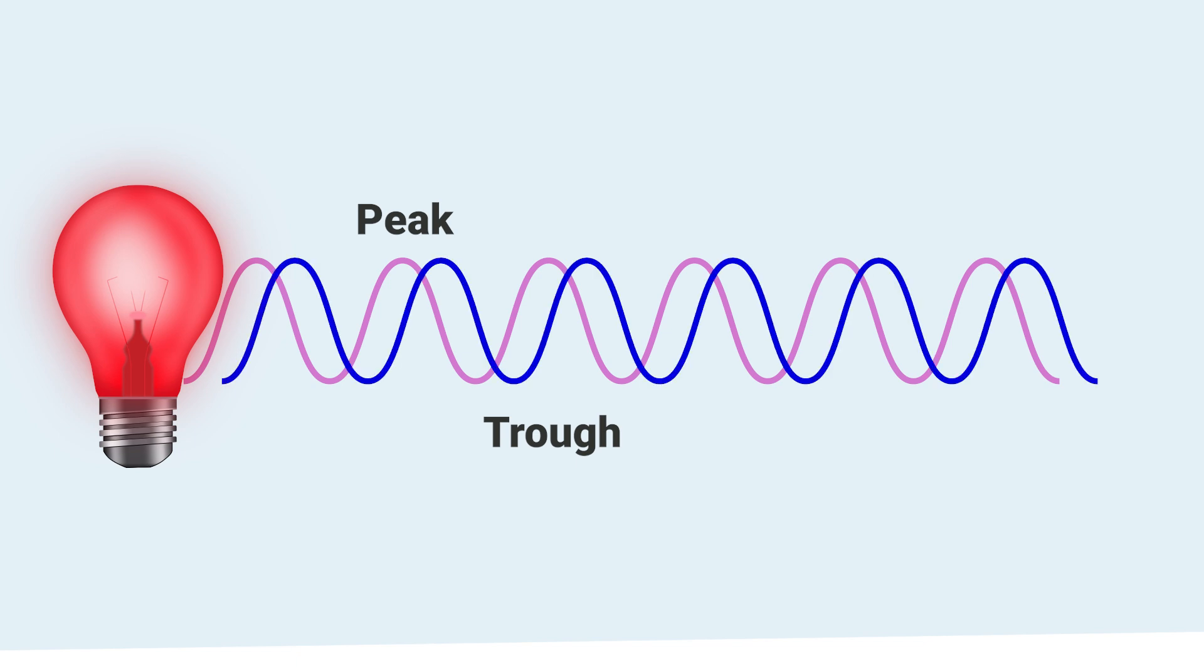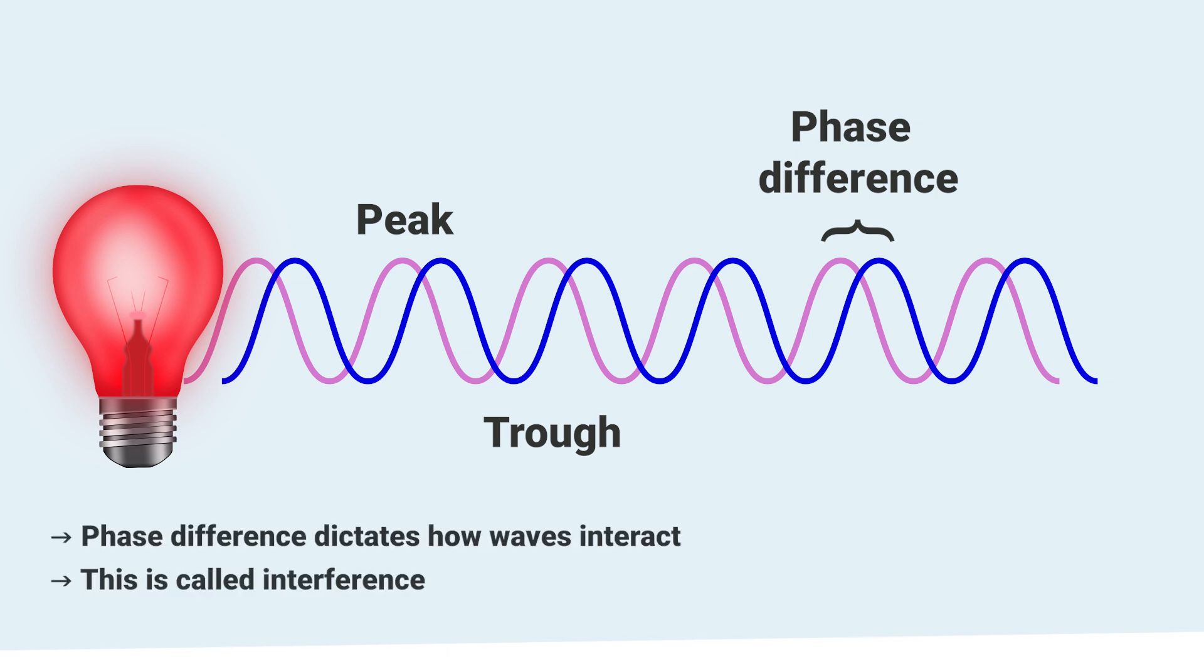Light travels in waves with peaks and troughs. Where these peaks and troughs occur in space is called the phase of the wave. Two waves may have different phases, which is called the phase difference. This difference dictates how they interact, which is called interference.